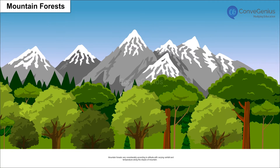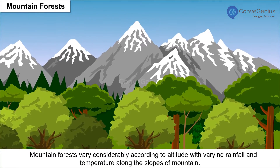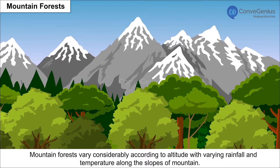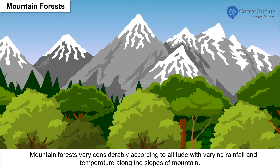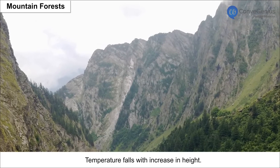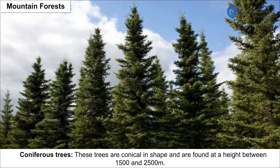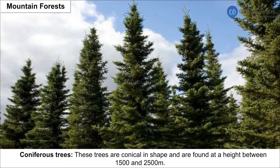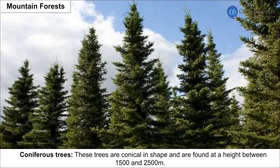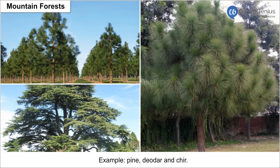Mountain forests vary considerably according to altitude, with varying rainfall and temperature along the slopes of mountains. Temperature falls with increase in height. Coniferous trees are conical in shape and are found at a height between 1500 and 2500 meters. Examples include Pine, Deodar, and Chir.